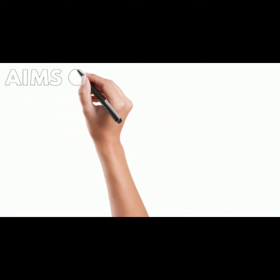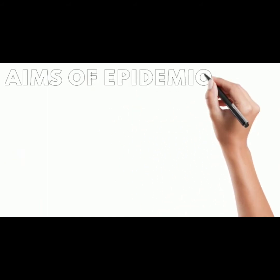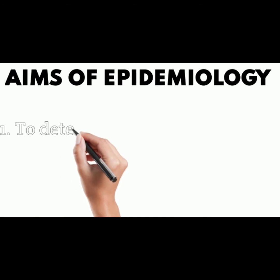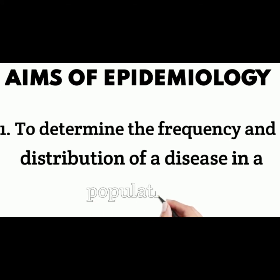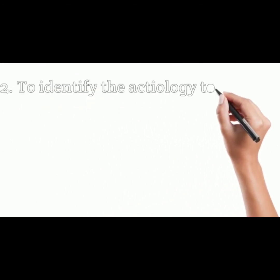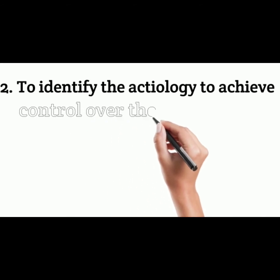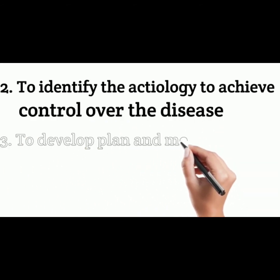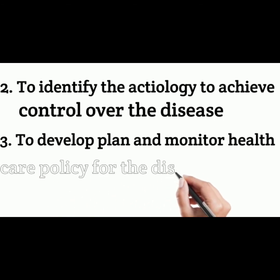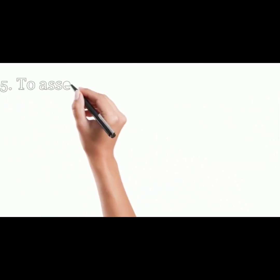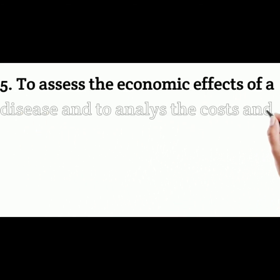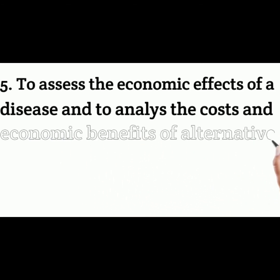Next comes to the aims of epidemiology. First is to determine the frequency and distribution of a disease in a population. Second is to identify the etiological factors to achieve control over the disease. Third is to develop, plan and monitor health care policy for the disease control programs. Next is to describe disease patterns in human population. And last is to assess the economic effects of a disease and to analyze the cost and economic benefits of alternative control programs.